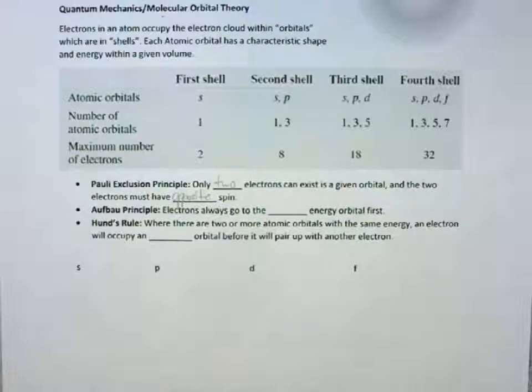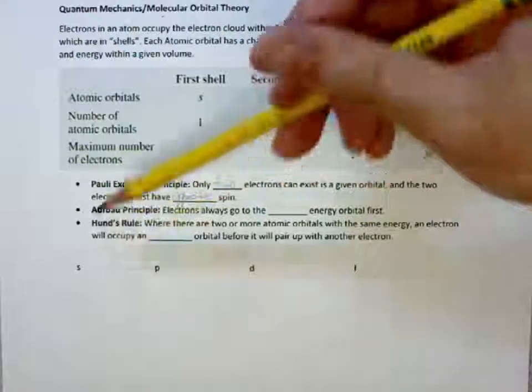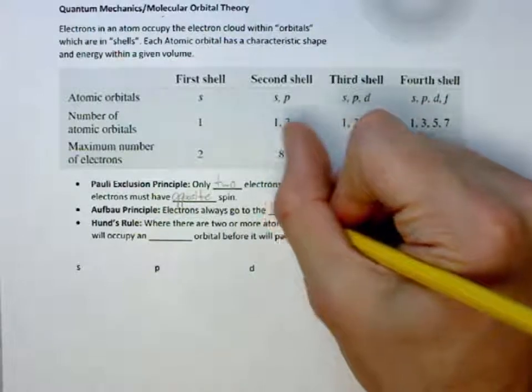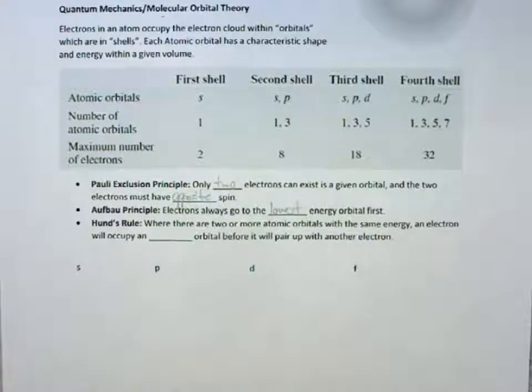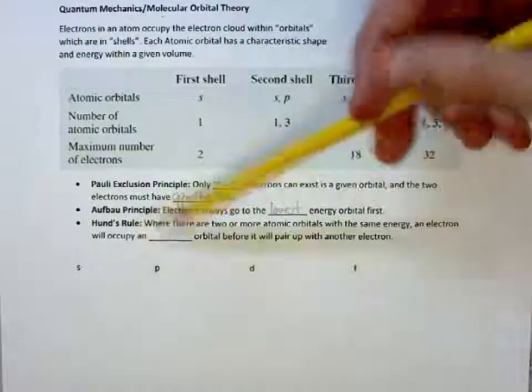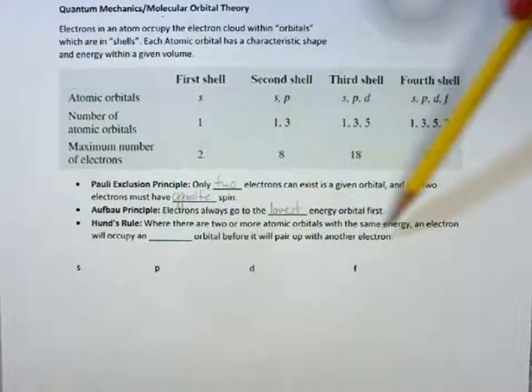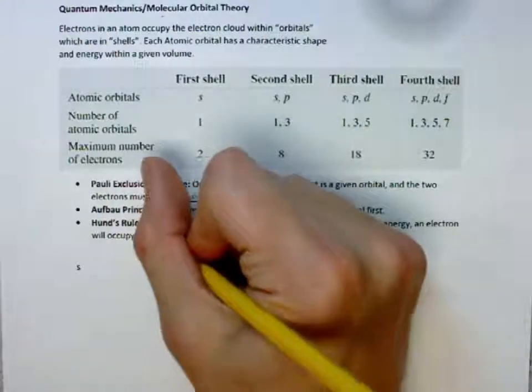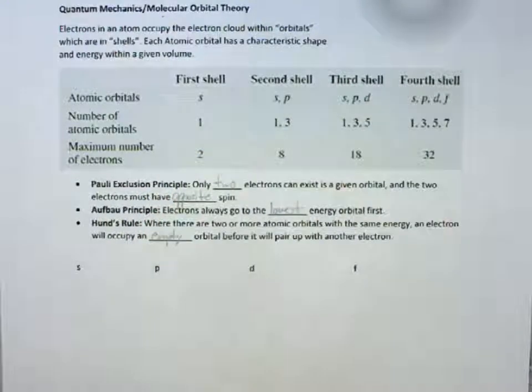The Aufbau principle states that electrons always go to the lowest energy orbital first. Hund's rule states that when there are two or more atomic orbitals with the same energy, an electron will occupy an empty orbital before it will pair up with another electron.